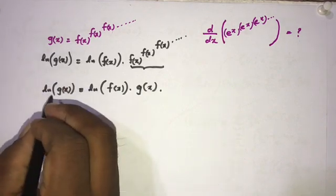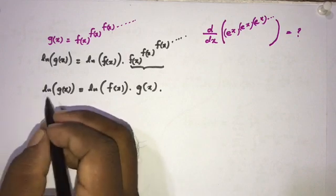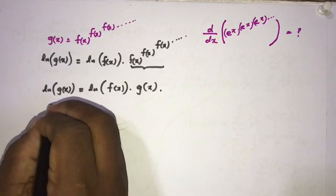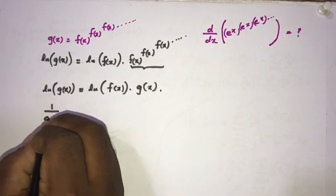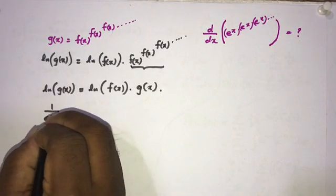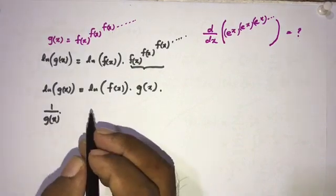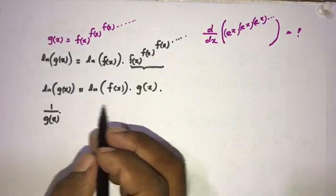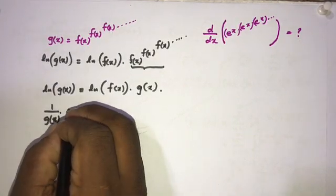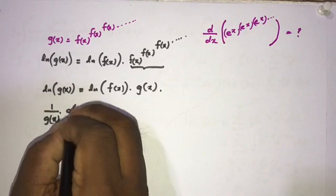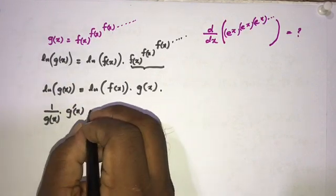Taking the derivative of the left side: the derivative of ln(g(x)) gives us one over g of x, and then according to the chain rule we multiply by the derivative of g of x, which is g'(x).